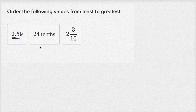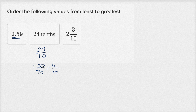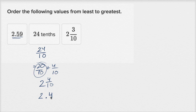24 tenths — let's think about this. That's 24 over 10, which is equal to 20 over 10 plus 4 over 10. 20 tenths is two wholes, so this is the same thing as 2 and 4 tenths, or 2.4. If we want to compare it to 2 and 59 hundredths, we could write this as 2 and 40 hundredths, or 2.40. Some of you might have gone directly: 10 tenths is 1, 20 tenths is 2, so 24 tenths is 2 and 4 tenths, or 2.4, or 2.40.